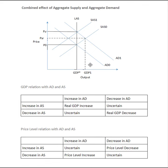Today we are going to talk about the combined effect of aggregate supply and aggregate demand. An increase in aggregate demand will increase price and increase output, while an increase in aggregate supply increases output and decreases price level.